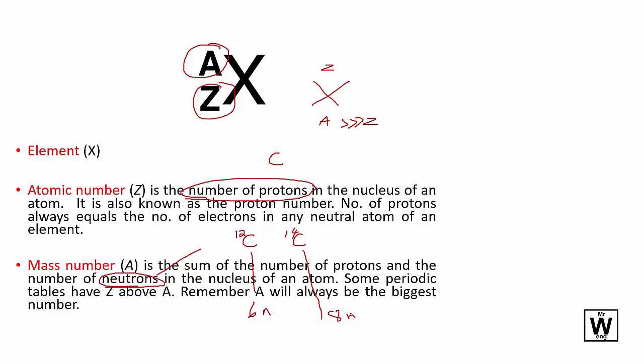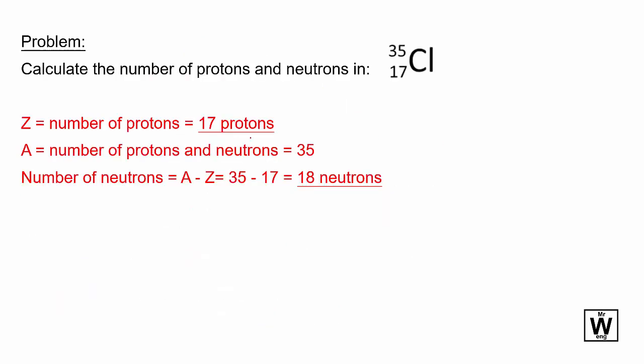Let's work through a problem. Calculate the number of protons and neutrons in chlorine-35. The atomic number 17 tells us there are 17 protons and 17 electrons. Chlorine is always 17; if it's not 17, it's not chlorine.